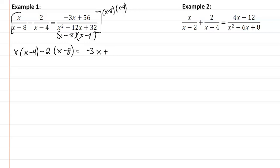So now we have x squared minus 4x minus 2x plus 16 equal to negative 3x plus 56.